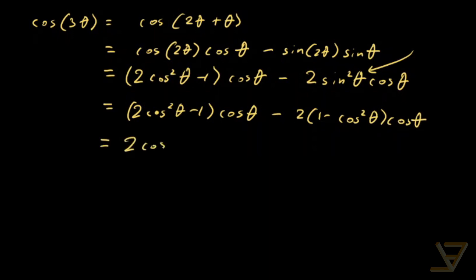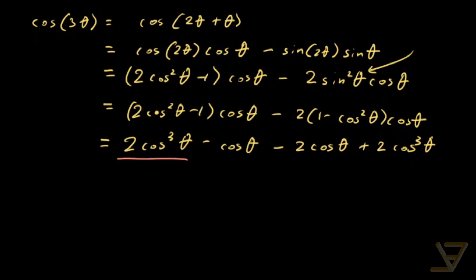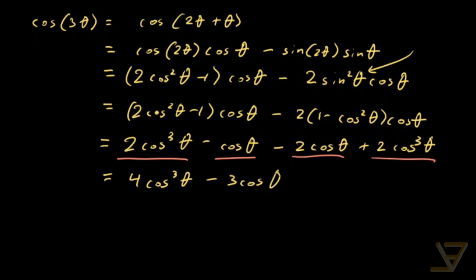Expanding using the distributive law we get 2 cos cubed theta minus cos theta, and here we get minus 2 cos theta plus 2 cos cubed theta. Collecting like terms: 2 cos cubed plus 2 cos cubed gives 4 cos cubed theta, and cos theta minus 2 cos theta gives minus 3 cos theta. So combining we get 4 cos cubed theta minus 3 cos theta.